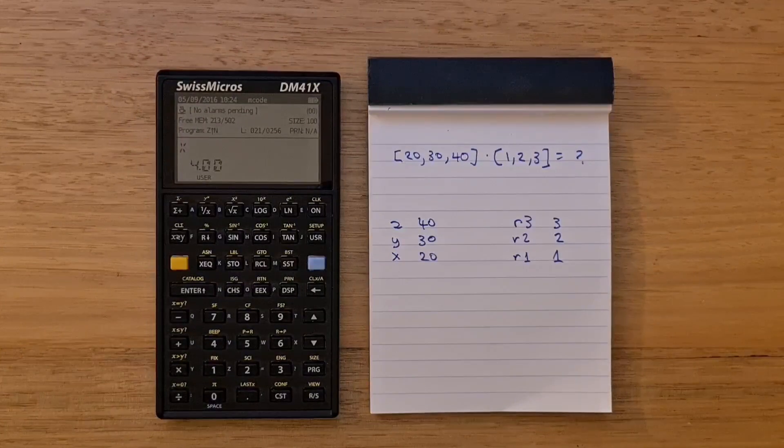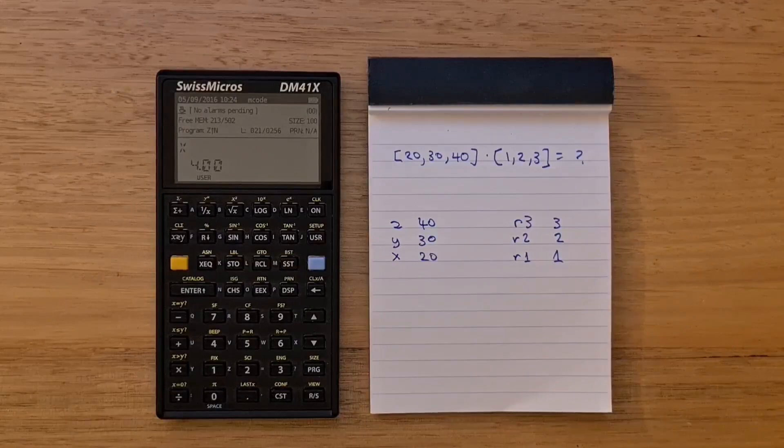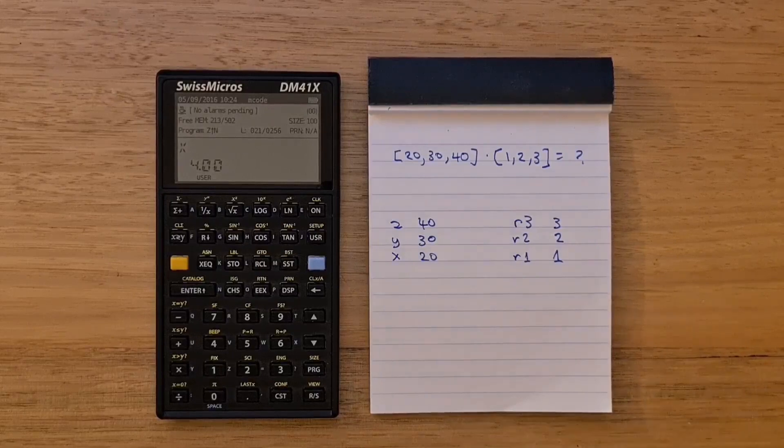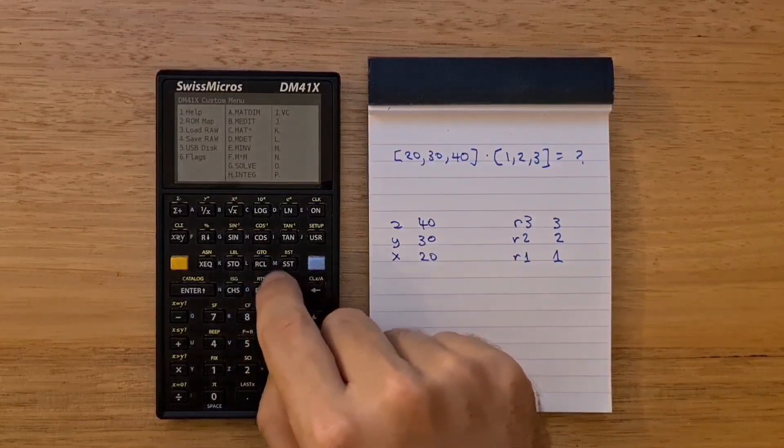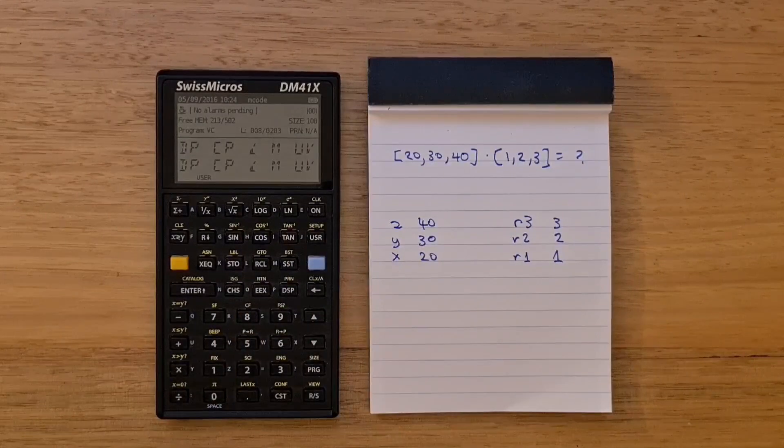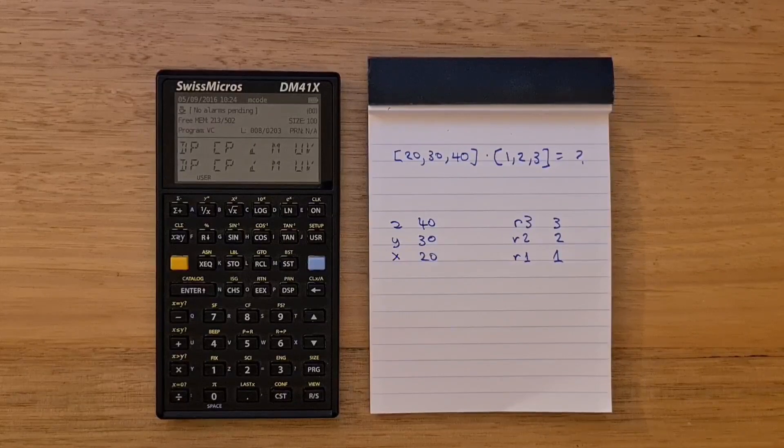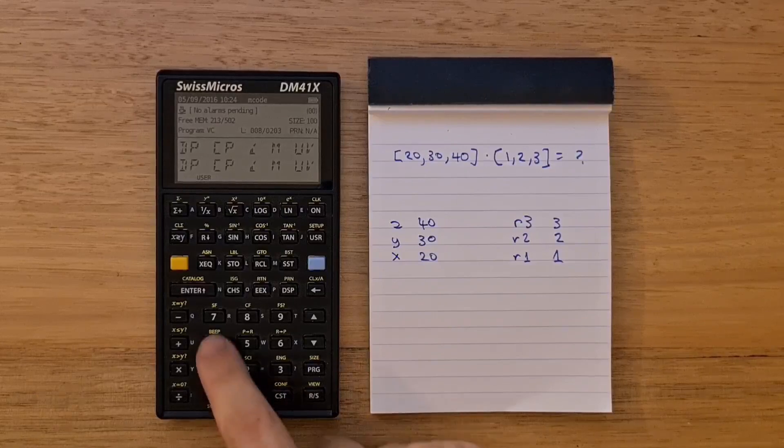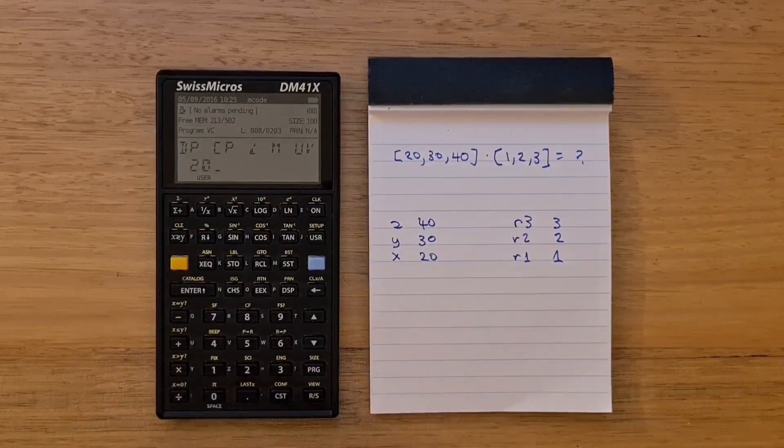The Advantage Pack also includes a vector calculator program that supports operations on three dimensional vectors described in rectangular coordinates. Vectors are represented on the stack in the X, Y and Z registers. The upper level of the vector stack is stored in R1, R2 and R3 data storage registers. To start the vector calculator, we execute the VC command. The VC command provides a menu of operations, but we can start by entering the three components of our first vector. Then hit run stop.